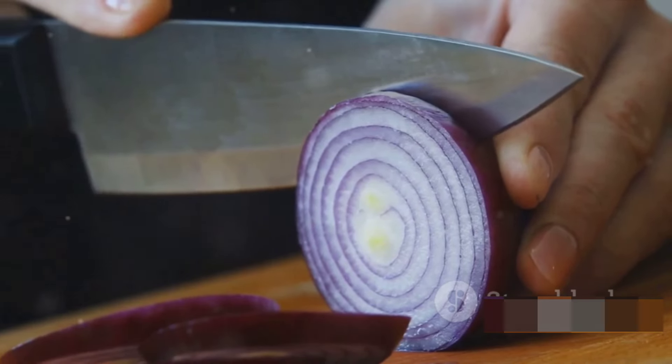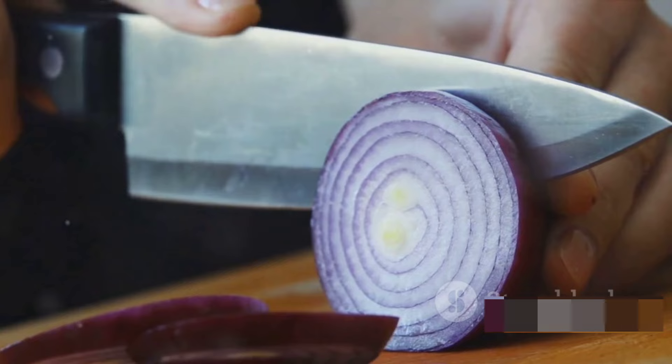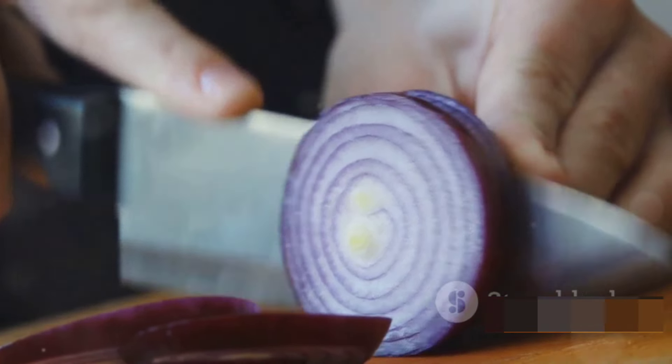Ever found yourself tearing up while slicing onions or peeling citrus fruits? Certain acts like these can induce tears from our eyes. Other than crying, it's all down to a series of chemical reactions that irritate our eyes.